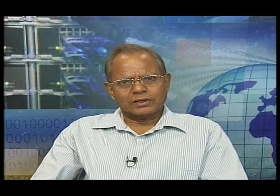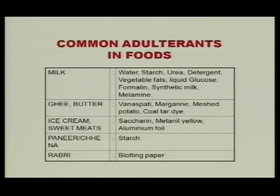In case of milk products like ghee and butter, common contaminants are vanaspati or vegetable fat, margarine, or mashed potato. Coal tar dye is also added for coloring. For ice cream and sweet meats, saccharine, methylene yellow, and aluminum foil are common contaminants. This type of adulteration is done mostly in festive seasons like Diwali or Holi when the demand for sweet meats is more.